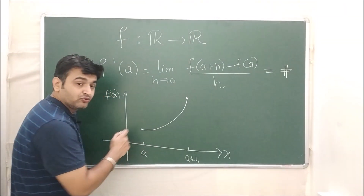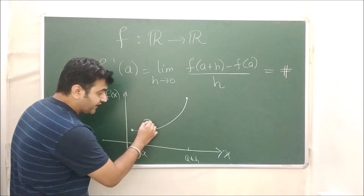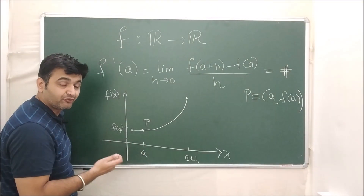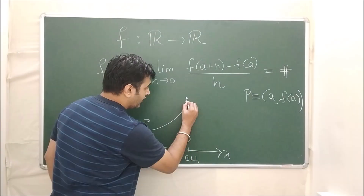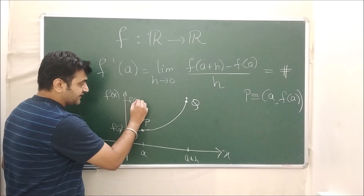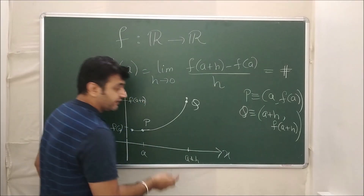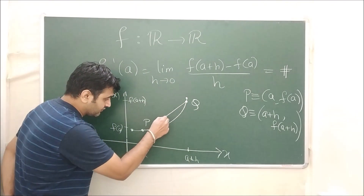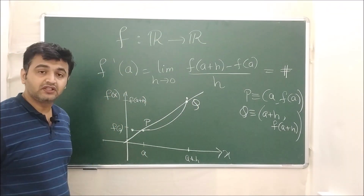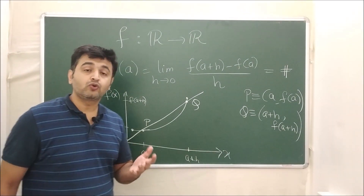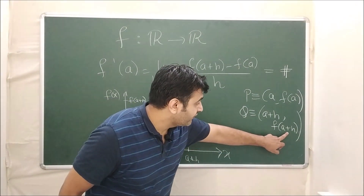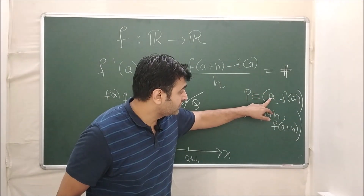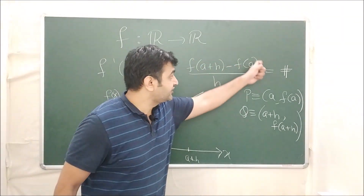Geometrically: if this is my point a, then the graph point is P = (a, f(a)). If a+h is the next input, the graph point is Q = (a+h, f(a+h)). You draw the line joining P and Q — the secant line. The slope of this line is (f(a+h) − f(a)) / (a+h − a), which simplifies to (f(a+h) − f(a)) / h. This ratio is the slope of the secant line.